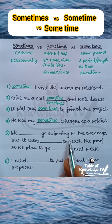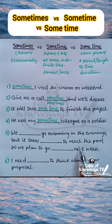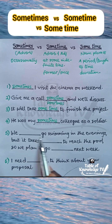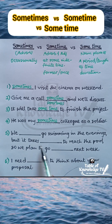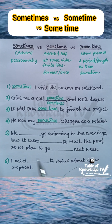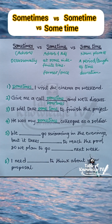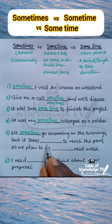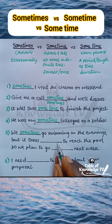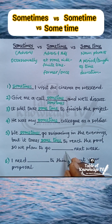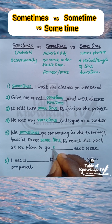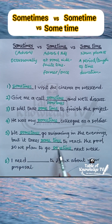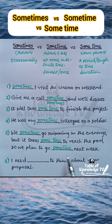Question five: We blank go swimming in the evenings, but it takes blank to reach the pool, so we plan to go blank next week. We occasionally go swimming — that's 'sometimes' with S. It takes some period of time to reach the pool — that's 'some time' separated. We plan to go at some undefined time next week — that's 'sometime.' Answer: We sometimes go swimming in the evenings, but it takes some time to reach the pool, so we plan to go sometime next week.